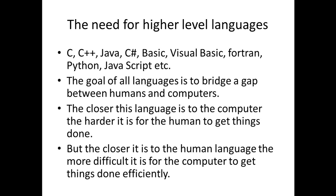C++ is another language which was built on top of C, but it is a different language — not the one we will be learning here. Java is another example, very much based on C and C++ but with significant differences in the way it's implemented. C Sharp is another one, then there's Basic and Visual Basic, Fortran, Python, and JavaScript. JavaScript and Java, by the way, are not the same. All of these languages are a little bit easier for humans to understand and can be converted into the binary code that the computer understands.